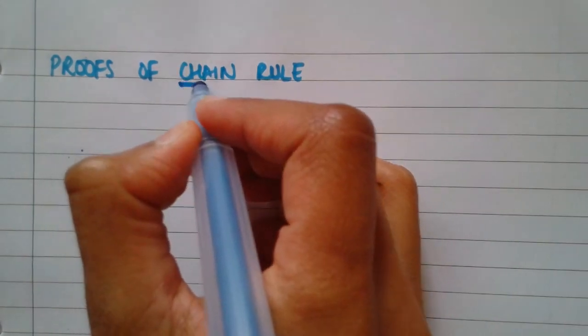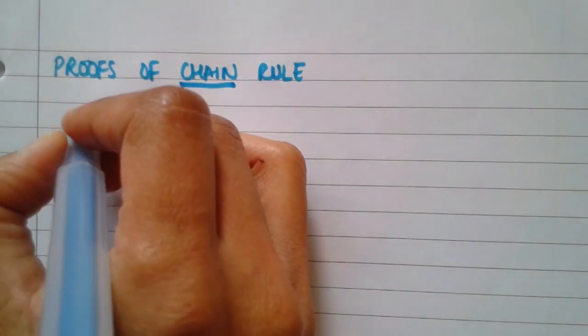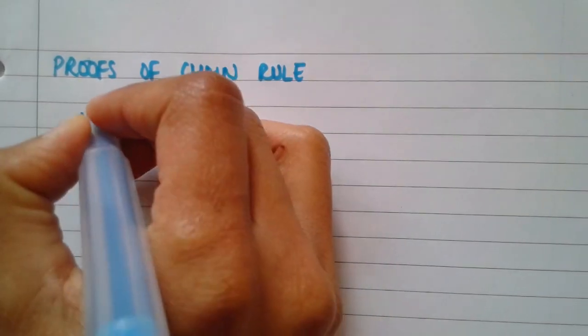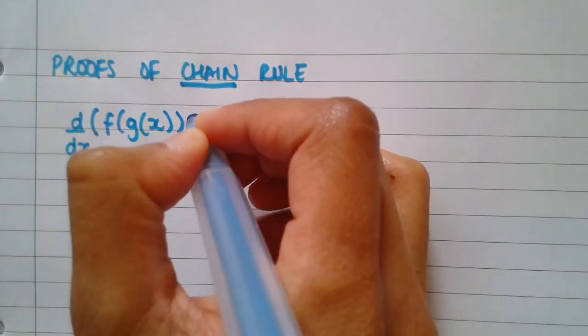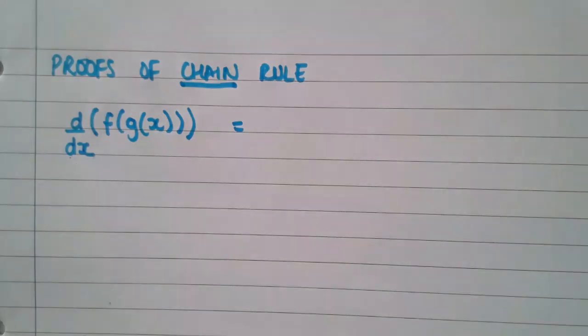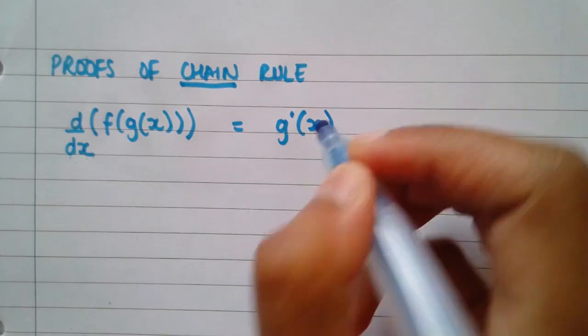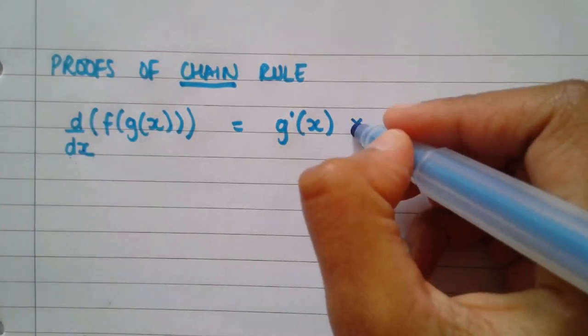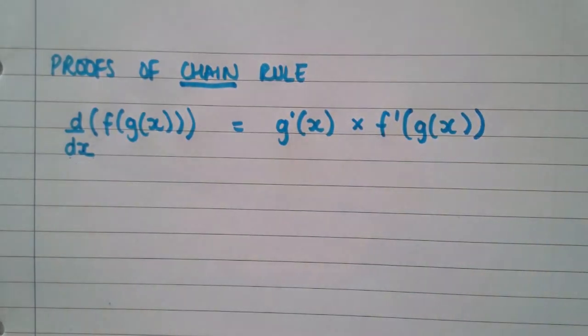In this video we're going to look at specifically the chain rule, which states that if you have a function within another function, which means you've got a function g of x within the function f of x, the derivative of that function is you differentiate the inside, and you multiply it by the derivative of the outside. That's the general notation. So it's the derivative of g of x multiplied by the derivative of f of g of x.